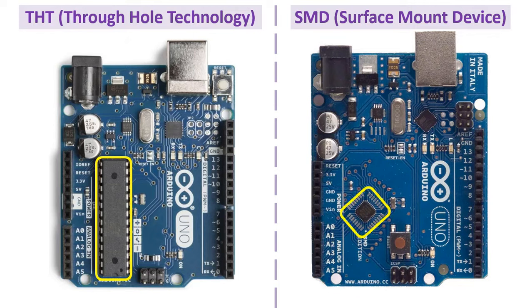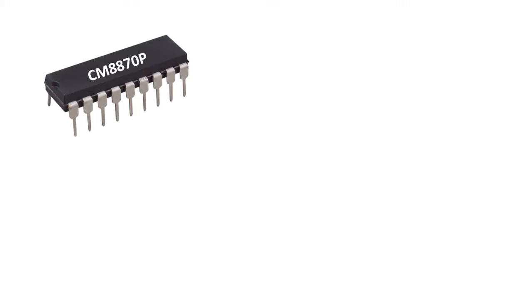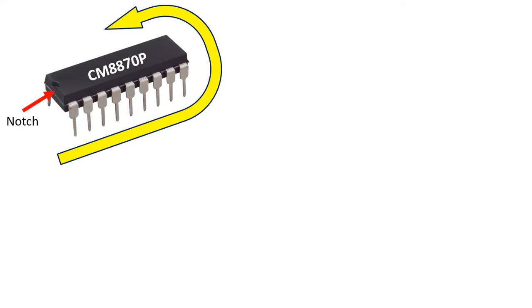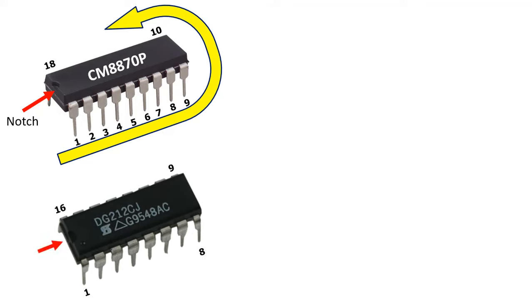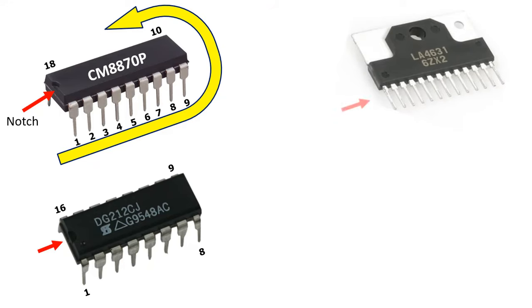Now let's look at how the pins of the integrated circuits are numbered. When we hold it to read the text on the IC, there is a notch on the left side. Pin names are numbered starting from this notch. This integrated circuit has 18 pins. This next IC is a 16-pin IC. When we hold it to read the text, there is a dot on the left, and the pins are numbered from left to right. As you can see, this is also a 13-pin IC.